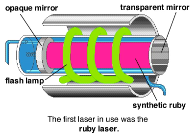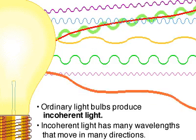Coiled around the bar is a flash lamp. Ordinary light is incoherent, with many wavelengths moving in different directions.